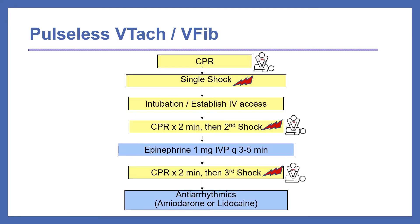Here's the ACLS algorithm for pulseless VTac or VFib. It is quite different from that of asystole and PEA. Once the arrhythmia is detected, a single electric shock is delivered, followed by intubation and establishing IV access. CPR is continued for two minutes, and if a discernible rhythm is not detected, a second electric shock is delivered. Epinephrine 1 mg IV push every 3 to 5 minutes is then administered, along with CPR for another two minutes. If a discernible rhythm is still not detected, a third electric shock is administered, followed by antiarrhythmic administration — either amiodarone or lidocaine.